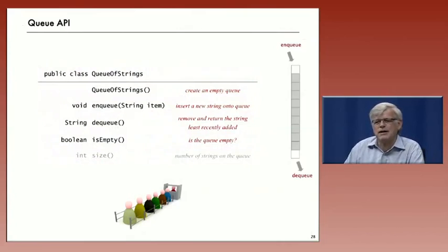For enqueue, we add an item at the end of the queue. And for dequeue, we remove an item from the beginning. It's as if you're waiting in line to buy a ticket.